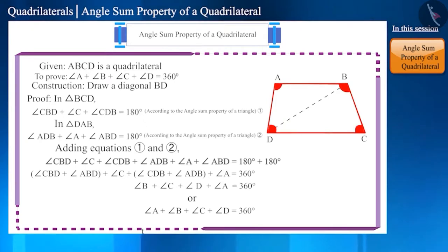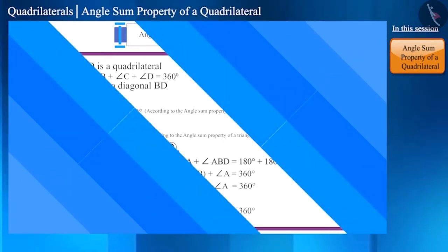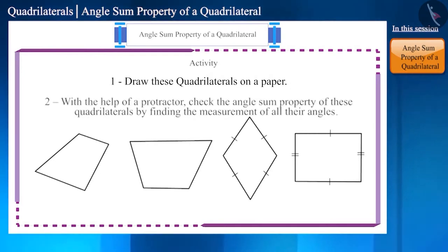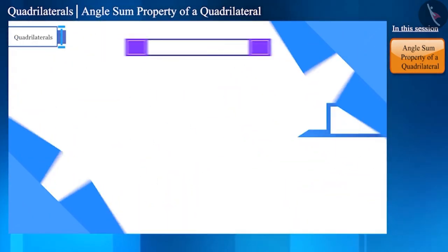Before ending this session, here is an activity. Do this together with your classmates. In the end you will find that even though these quadrilaterals are different and smaller or bigger in size, the sum of the measurements of their internal angles is 360 degrees.